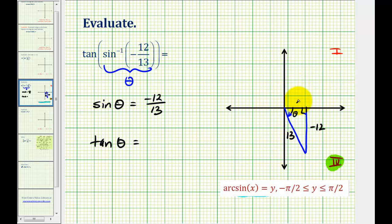And then using the Pythagorean theorem, we know that x squared plus negative twelve squared must equal thirteen squared. So we'd have x squared plus one hundred forty-four equals one hundred sixty-nine. So x squared is equal to twenty-five.